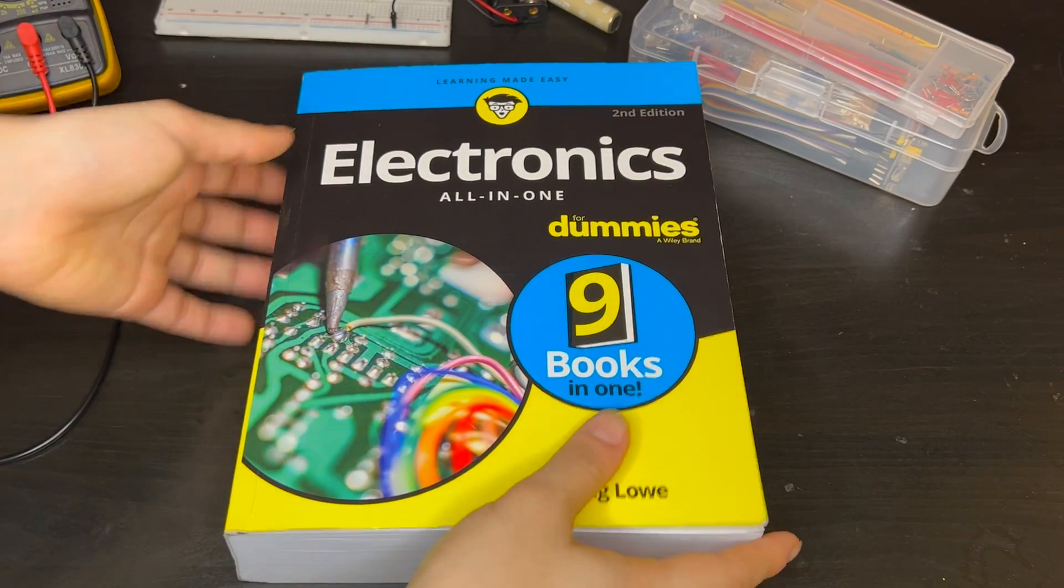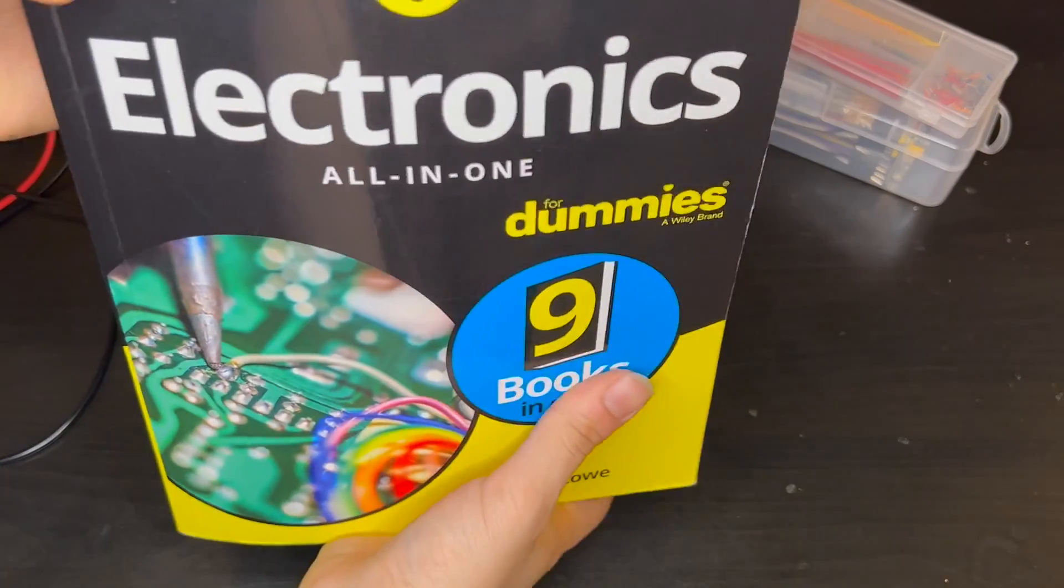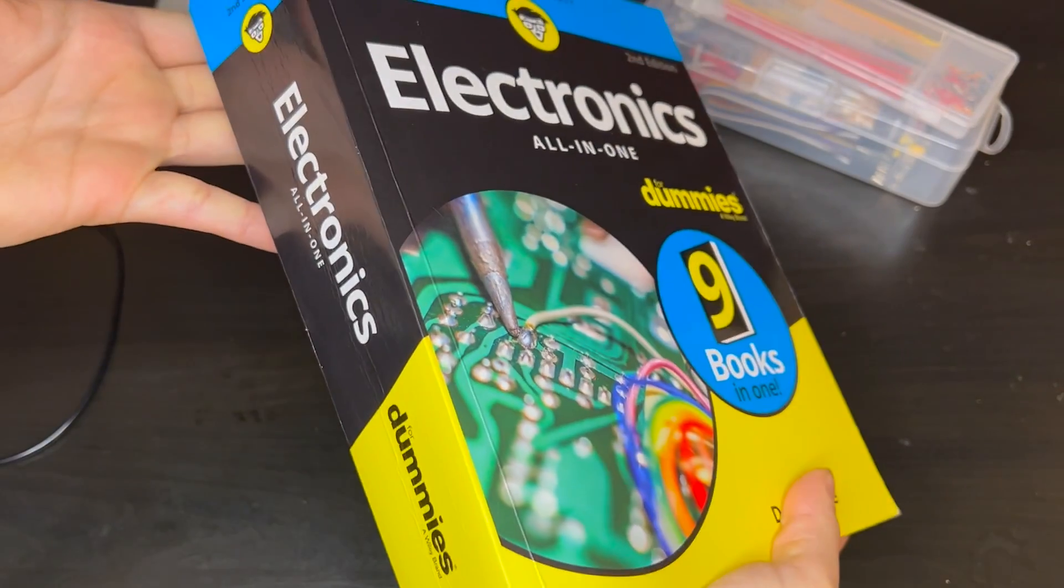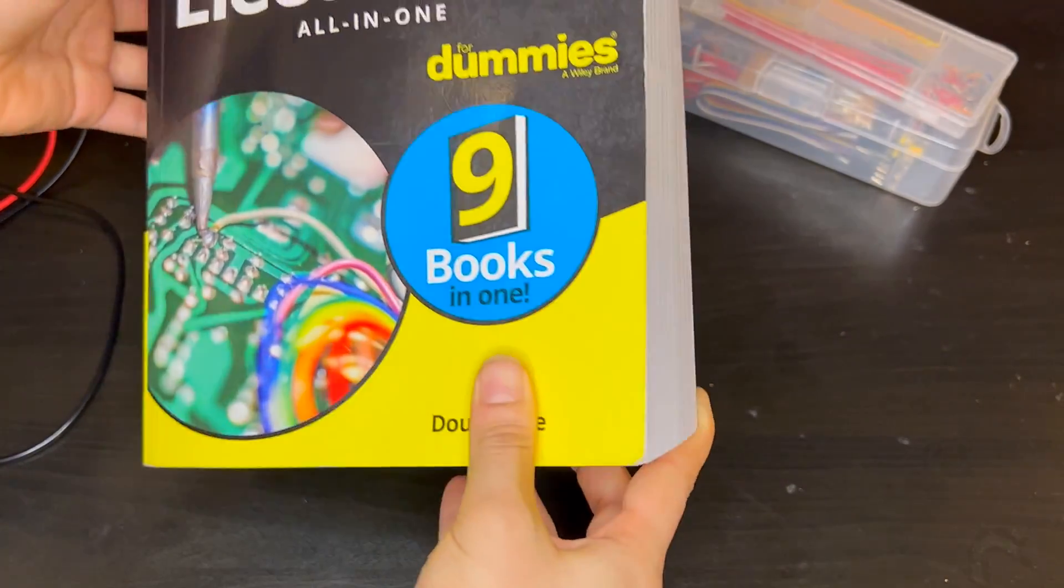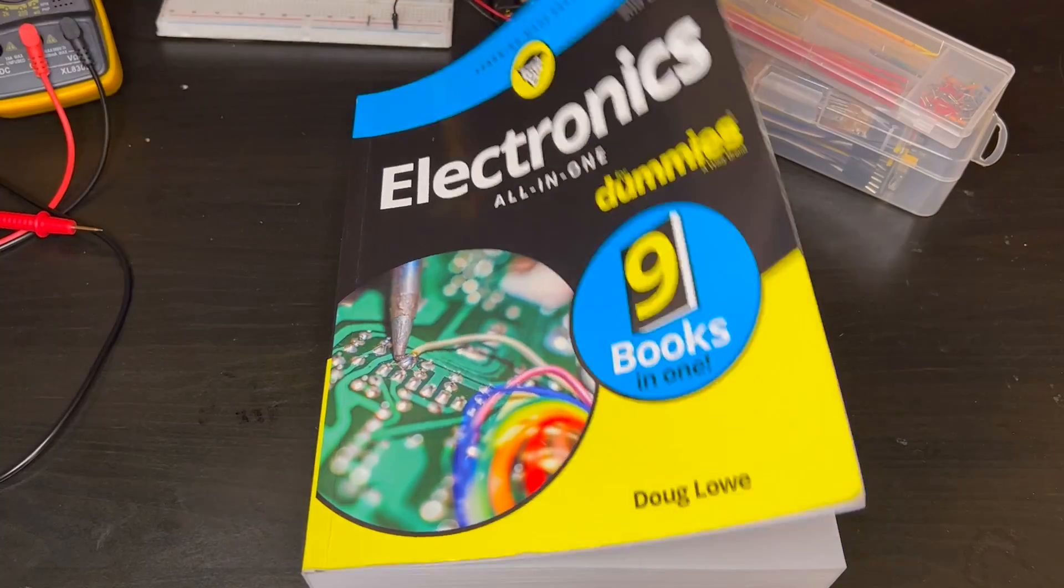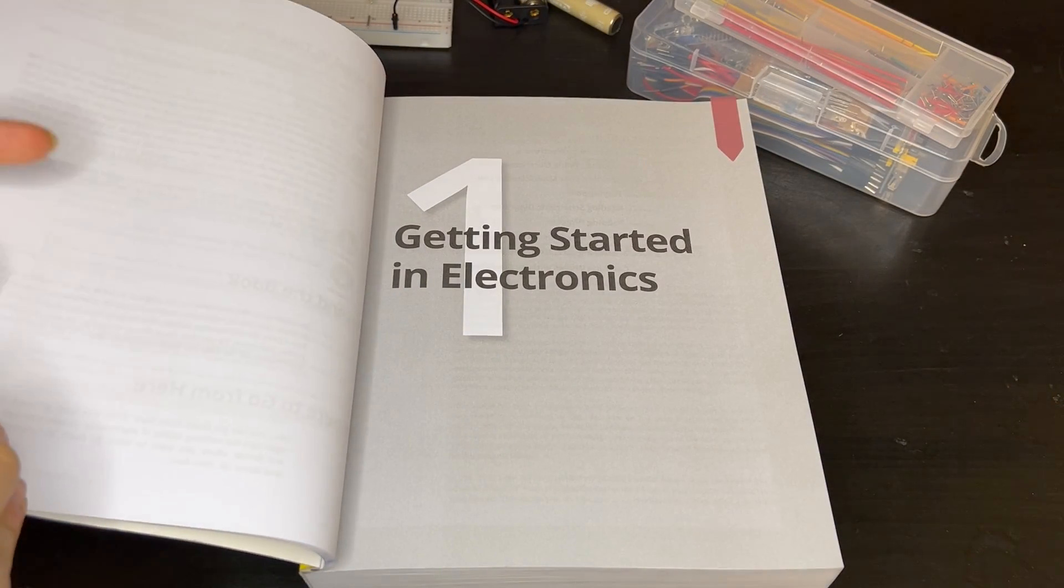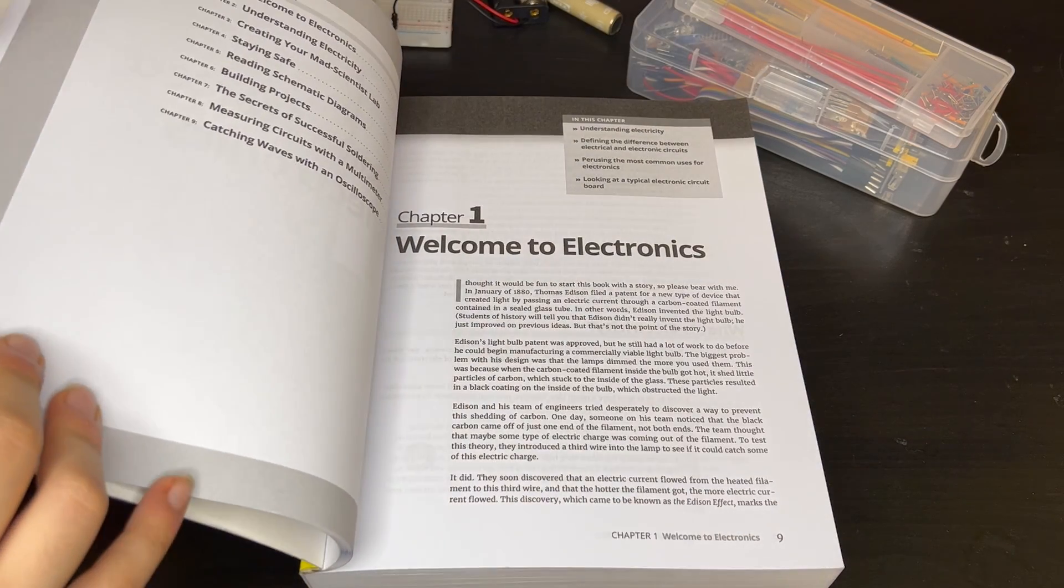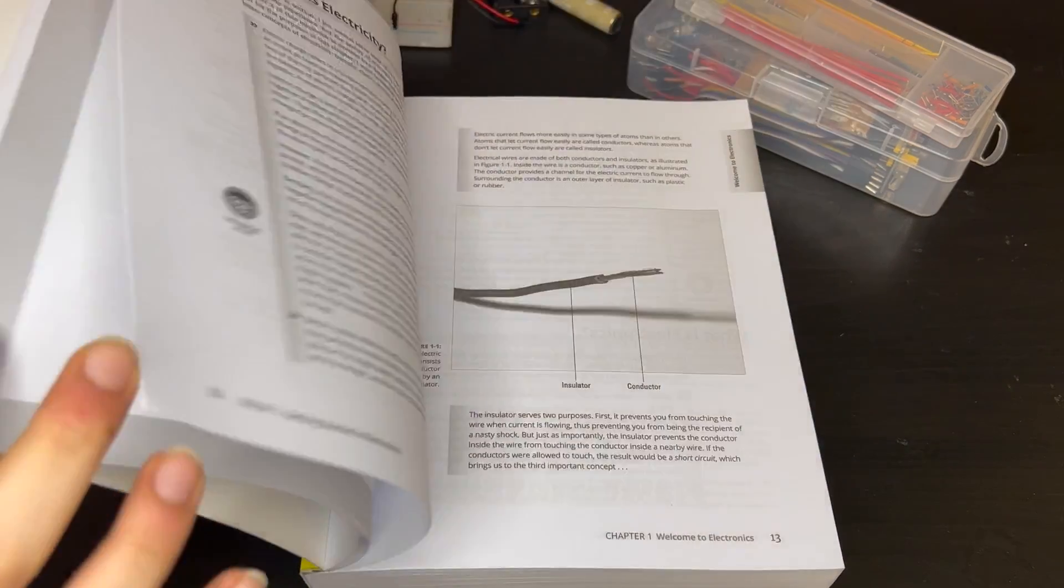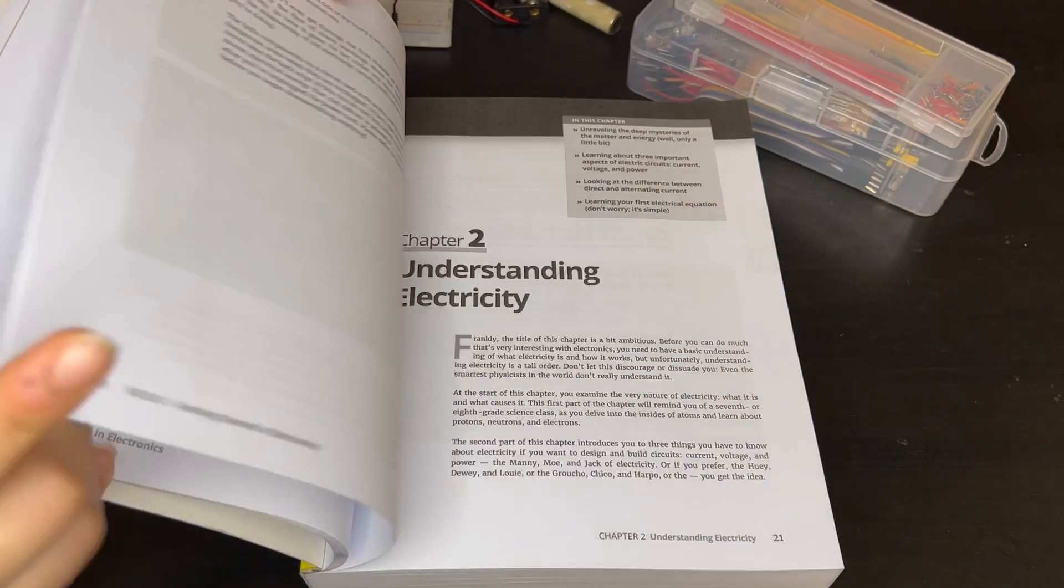I'm reviewing Electronics for Dummies. This is a huge book with about 900 pages, divided into nine books. The first book, Book Number One, is Getting Started. It introduces concepts like current and voltage, starting very simply.